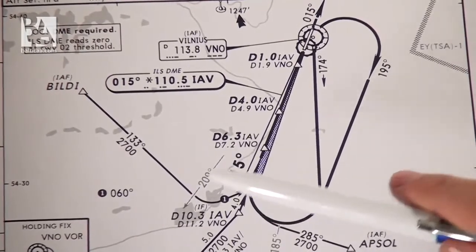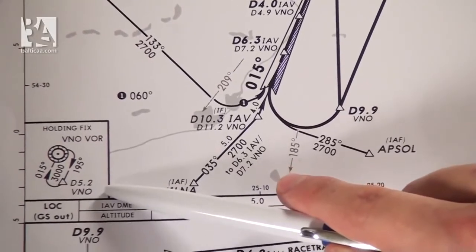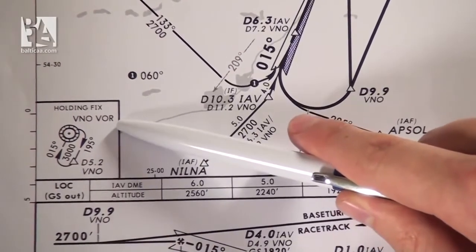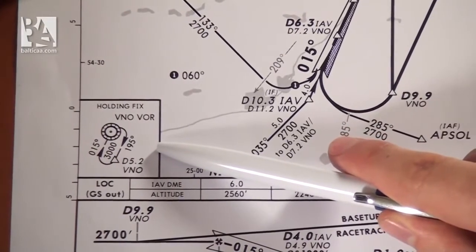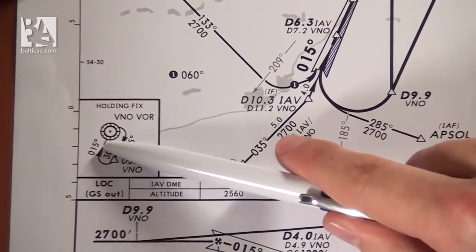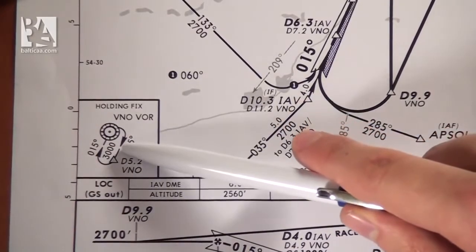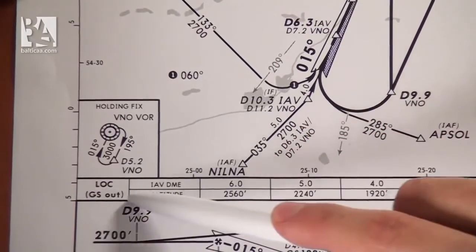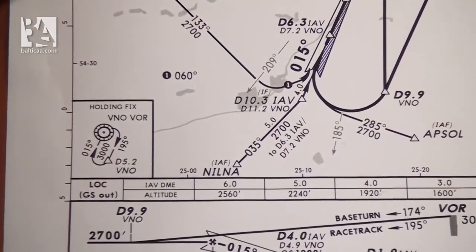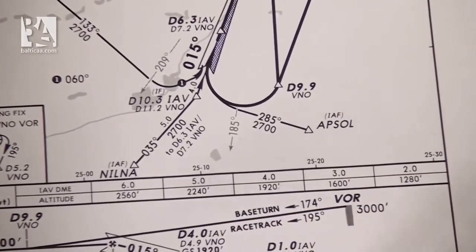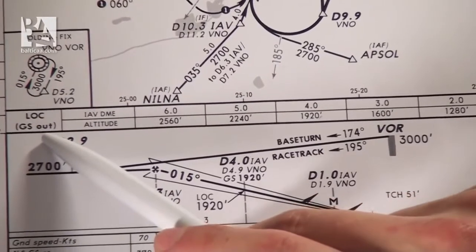Here we can check how the holding looks over Victor November Oscar — an inbound course of 015 degrees at 3,000 feet. Below all the maps we have altitude information. This is used if the glide slope is out and we are doing the localizer approach. For example, at India Alpha Victor DME 6.0 we should be at 2,560 feet; at 5.0 miles we should be at 2,240 feet, and so on.